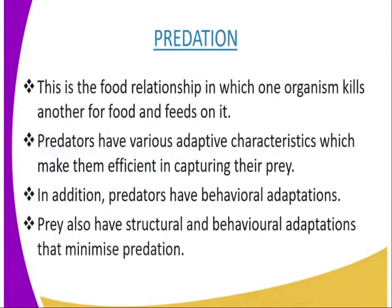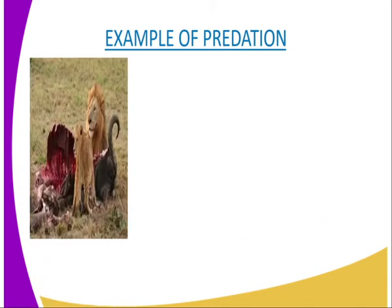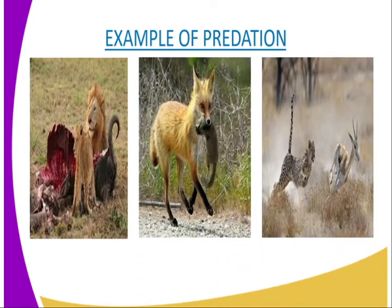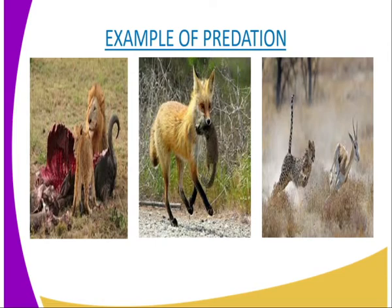We are now through with competition. The next biotic interrelationship is predation. Predation is a food relationship in which one organism kills another for food and feeds on it, either wholly or partly. For example, we can see the lion feeding on its prey, and the cheetah running after a gazelle. The organism which kills another for food is referred to as the predator, while the one killed is the prey. Here, the predator is the cheetah while the prey is the gazelle.